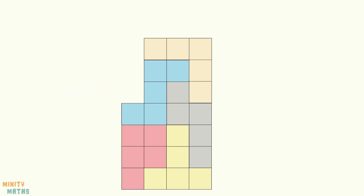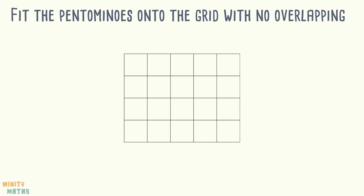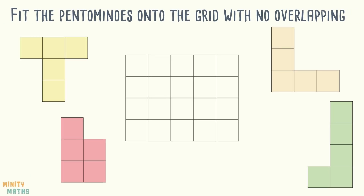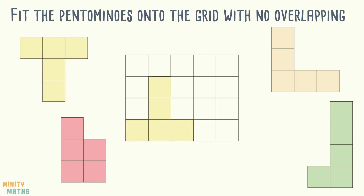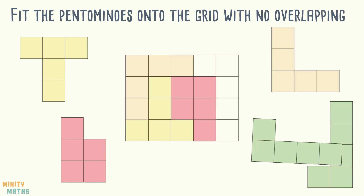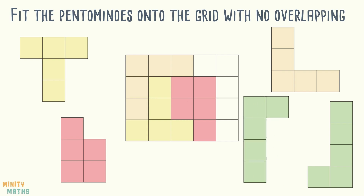Let's have a look at this first puzzle as an example. We will use only the pentominoes shown on screen to completely fill the grid. We can rotate and reflect them if we need to. There may be more than one way to complete the puzzle.